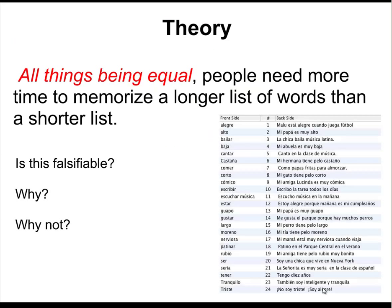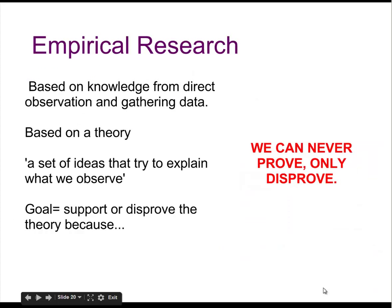What about this one: 'All things being equal, people need more time to memorize a longer list of words than a shorter list of words.' Pause the video and tell me if this is falsifiable. 'All things being equal' means that the people used in this experimentation are of equal memorizing capabilities — I'm not going to use someone with dementia and a five-year-old who can barely read. I'm going to give people of equal mental abilities the same list of words and the same support to memorize it. I can measure these things, so yes — this is falsifiable.